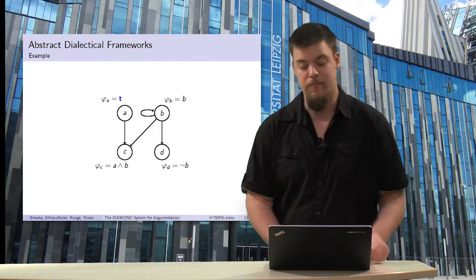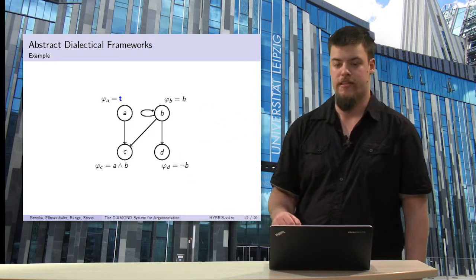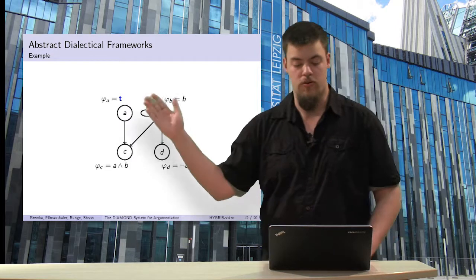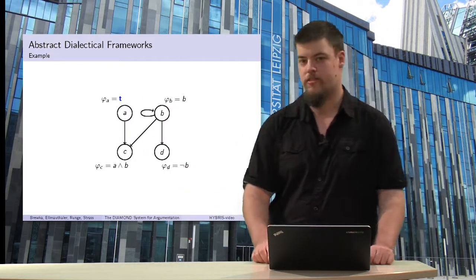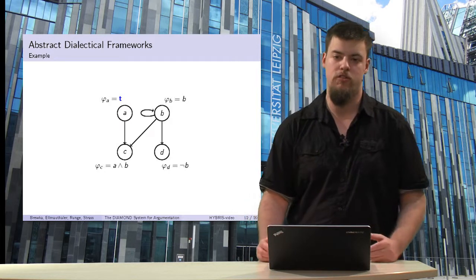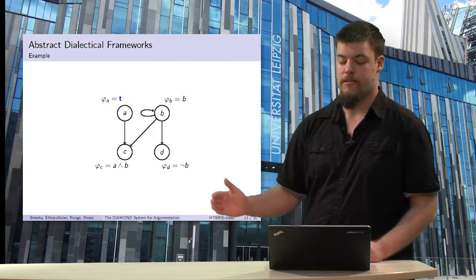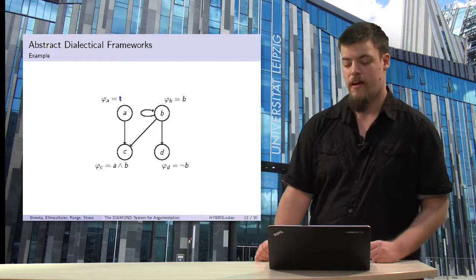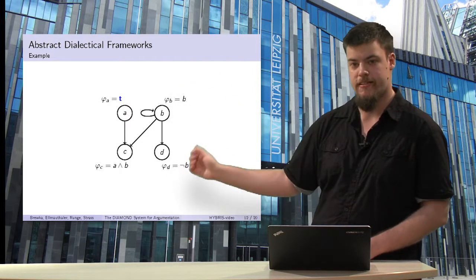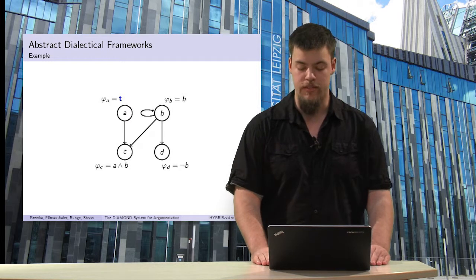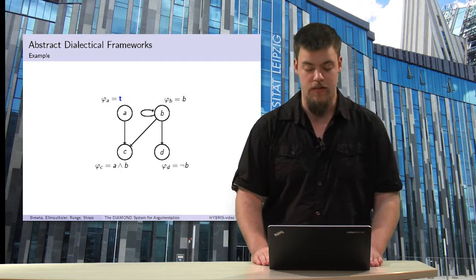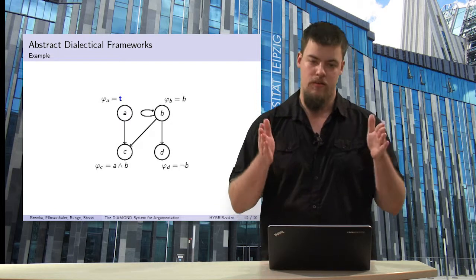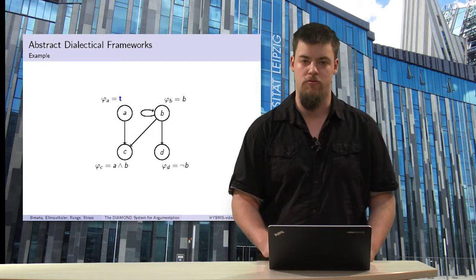Here is an example of an abstract dialectical framework with four statements A, B, C, and D, with propositional acceptance conditions. A has the acceptance condition 'true', meaning it is accepted in all cases. B has itself as its acceptance condition, meaning B only holds if B can be accepted. D has the acceptance condition 'not B', denoting that B attacks D. C has the acceptance condition 'A and B', meaning both A and B must hold for C to be accepted.